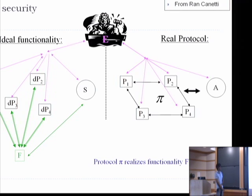UC security is basically a generalization of zero knowledge. It is a very nice paradigm and more useful because you can reason about portions of your security protocol and then argue about embedding them in bigger systems. It's compositional security, and that's always a good thing to have. So what does UC stand for? Universally composable.